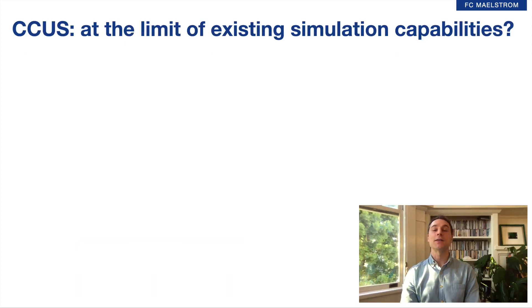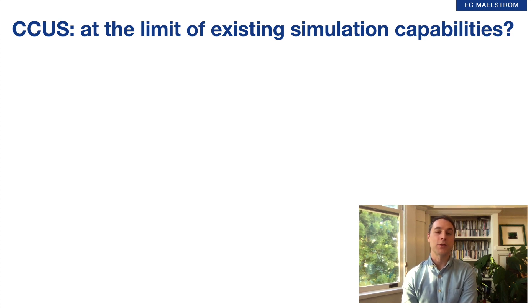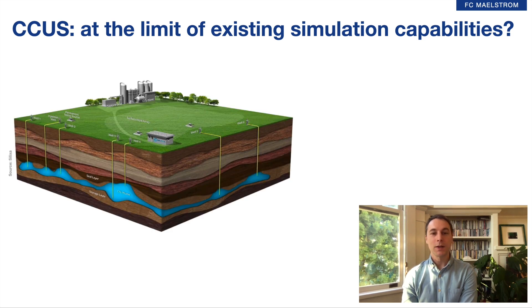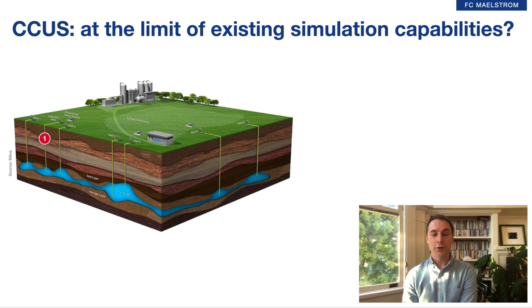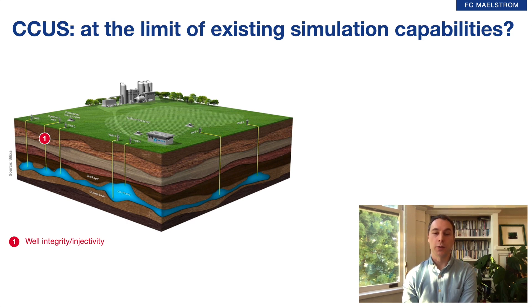Let us start by asking ourselves the following question: why do we need an HPC reservoir simulation tool for CCUS? This is what a typical carbon storage injection facility may look like. I'm going to highlight one by one the reasons why it is difficult to simulate such operations with traditional tools. First, near the wells: well injectivity and well integrity can be difficult to properly evaluate if you do not account for poromechanical deformations that occur due to the injection of supercritical CO2.